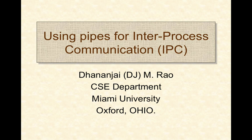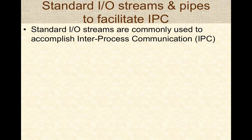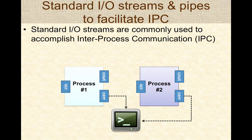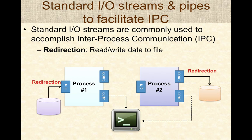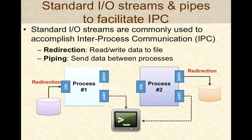This video demonstrates the process of using anonymous pipes for inter-process communication on the Linux operating system. Standard input-output streams are commonly used to accomplish inter-process communication along with pipes. Consider two processes where we would like to establish some kind of inter-process communication. We could either do redirection, which involves reading or writing data to files, or we could do piping, which involves sending data between two processes, typically accomplished using anonymous pipes.